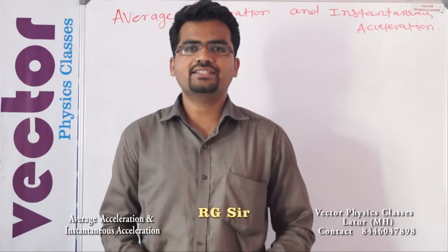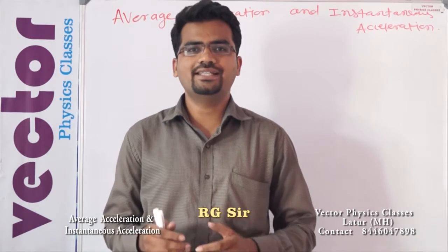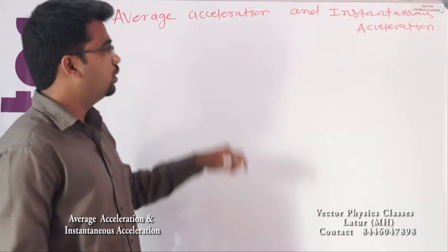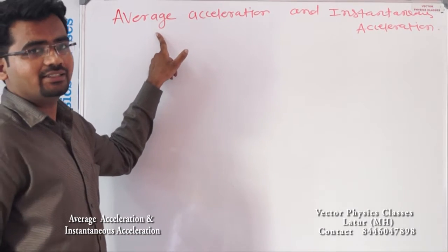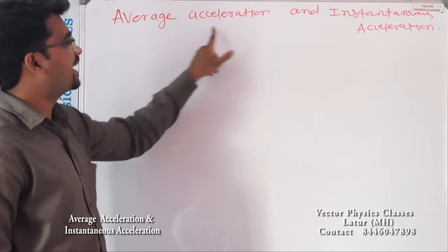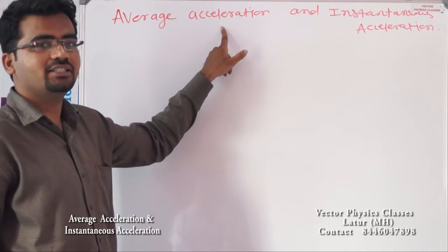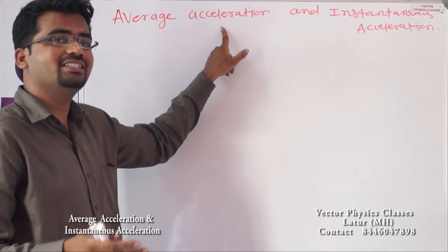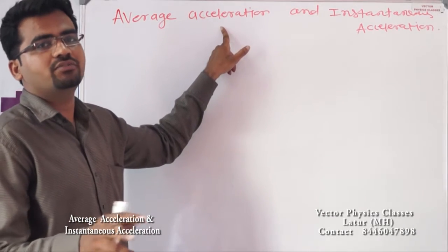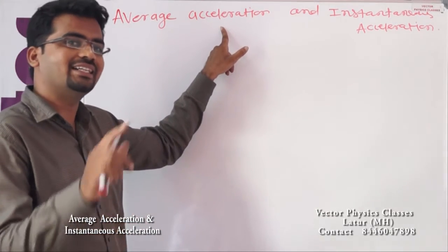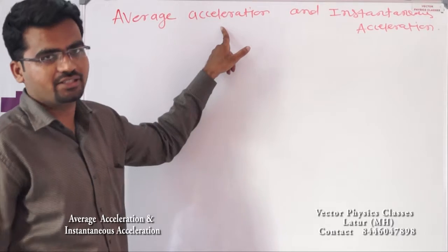Now we will study about average acceleration and instantaneous acceleration. Average is nothing but total something. So average acceleration is nothing but total change in velocity divided by the total time interval in which that change occurs.